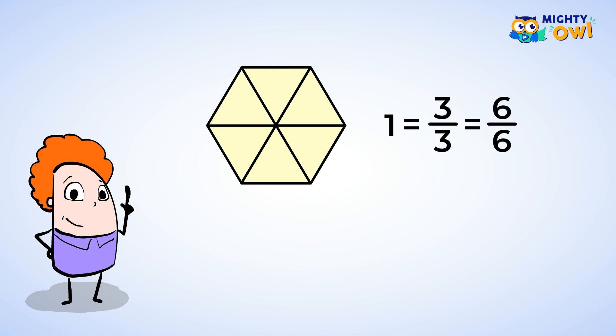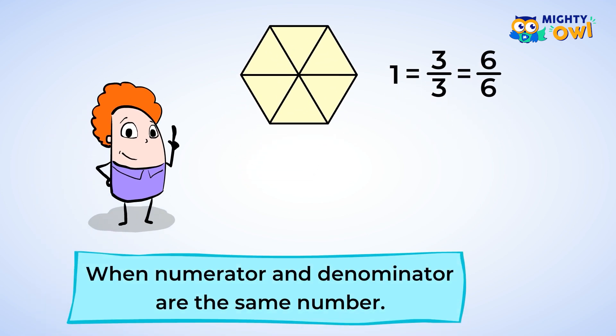Each of these are equivalent fractions, meaning that they are equal. They are all different ways of writing one whole. Notice that the numerator and denominator are the same number. Any time that happens with a fraction, it is equal to one.